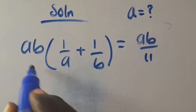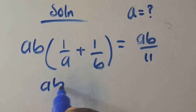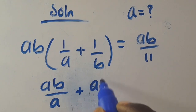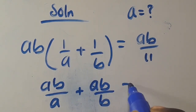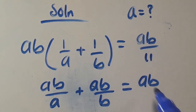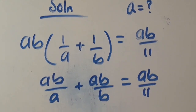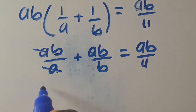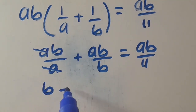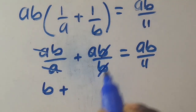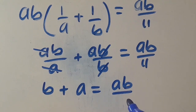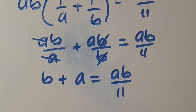So ab times 1/a gives b, and ab times 1/b gives a. The a's and b's cancel respectively, leaving us with b + a = ab/11.